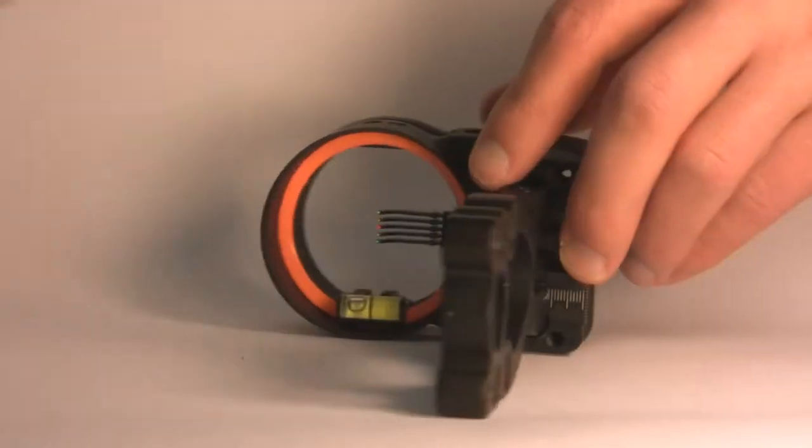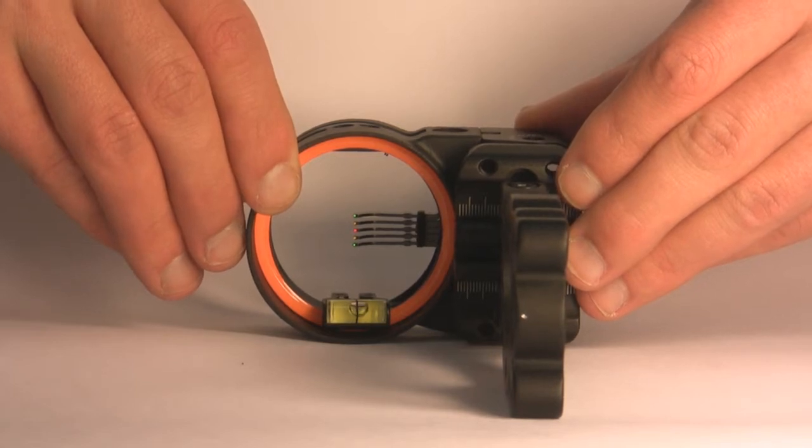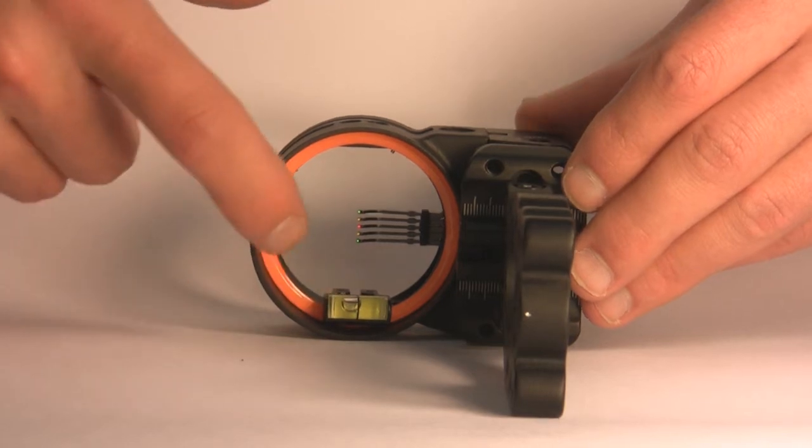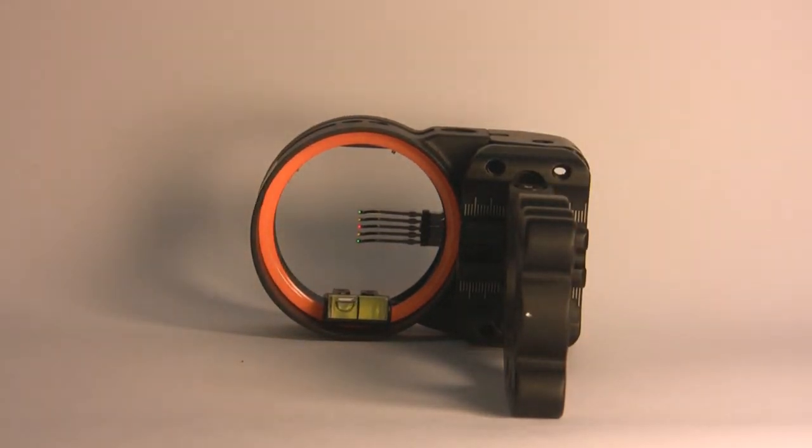This sight is available in a 3 or 5 pin model, .19 or .029 fiber sizes. You'll see the level is a glow in the dark level. And the orange ring, our shock tech ring, absorbs vibration and allows for easy sight acquisition.